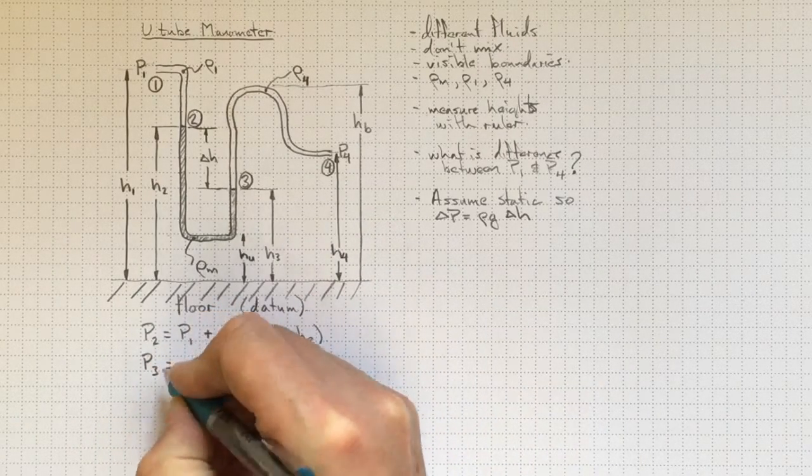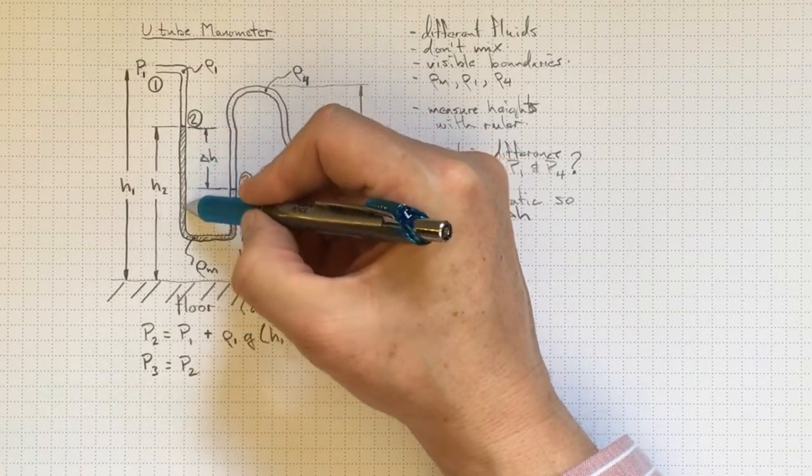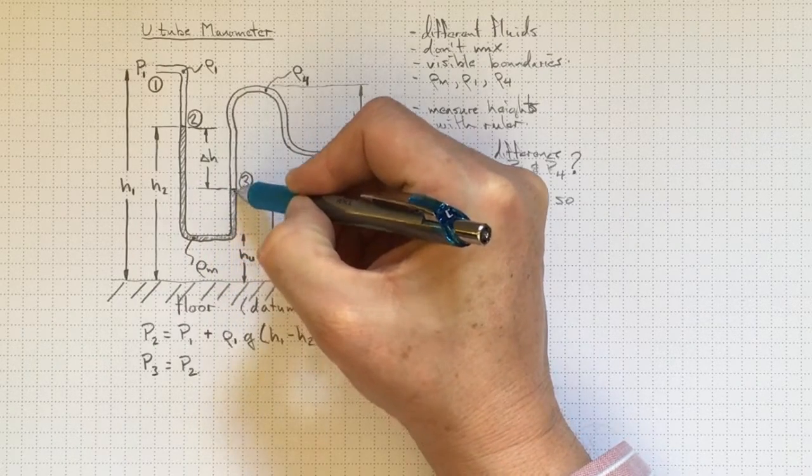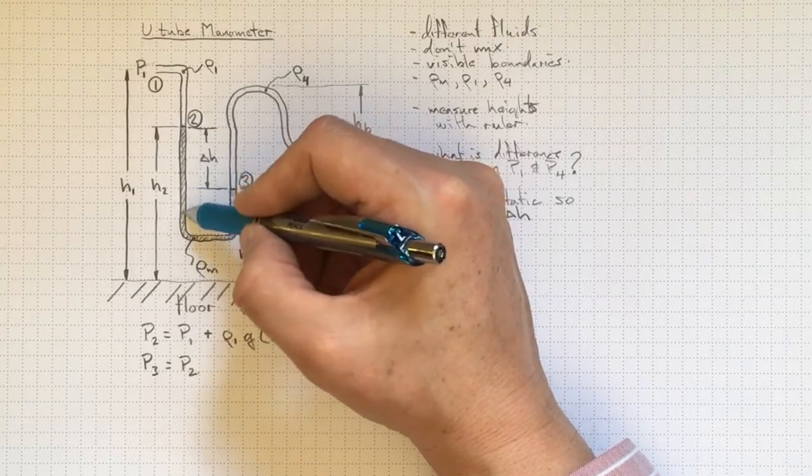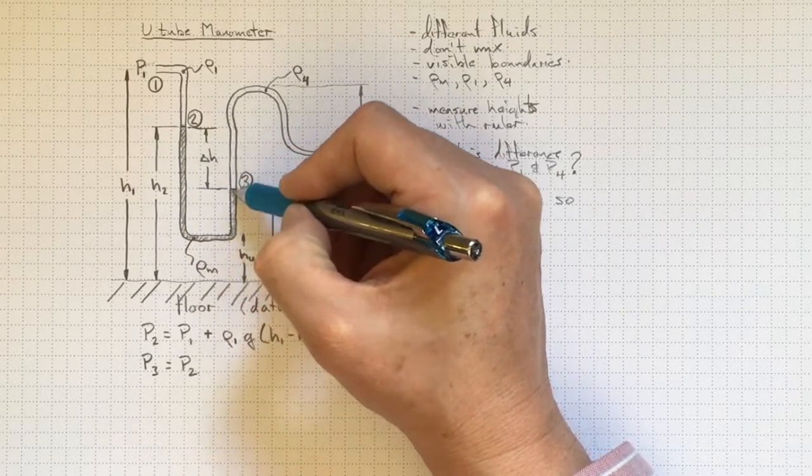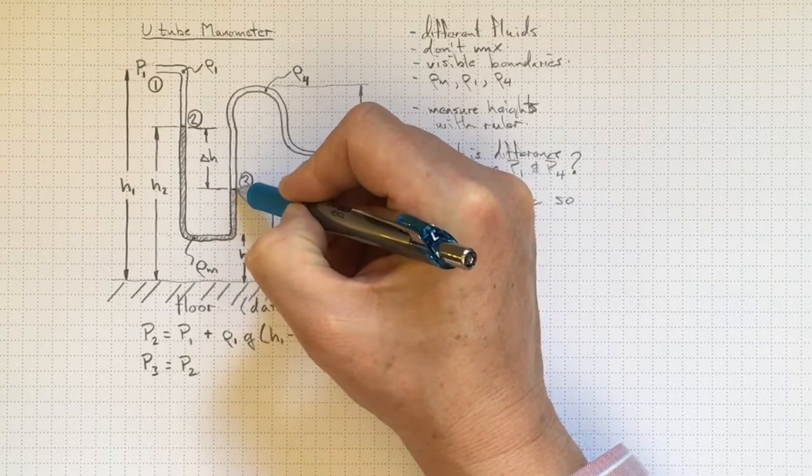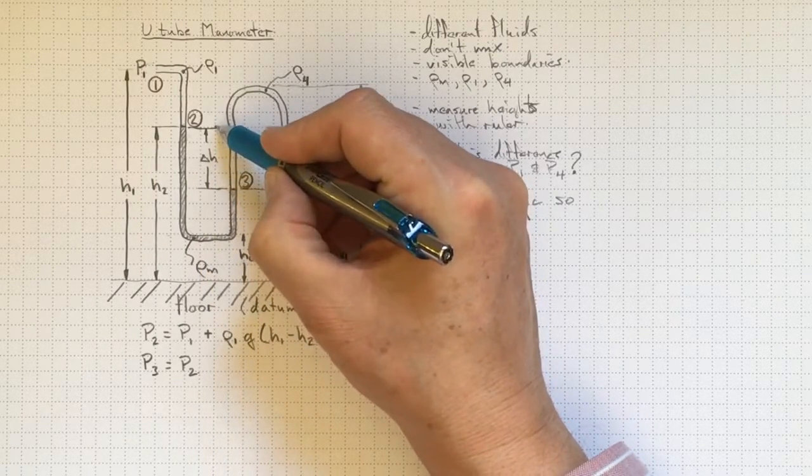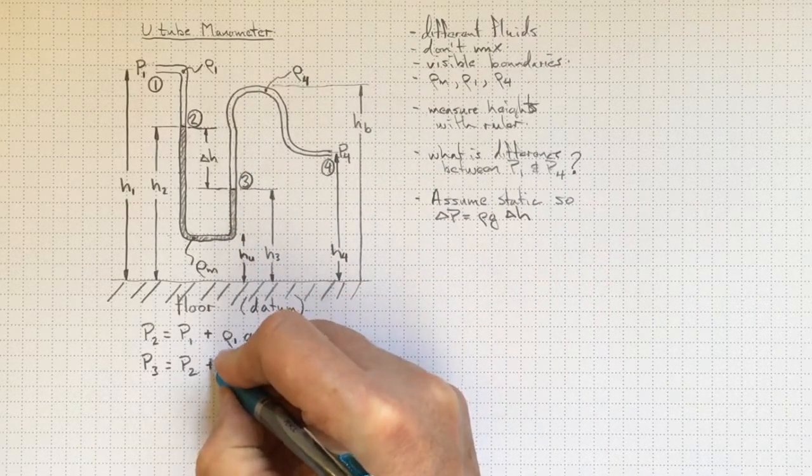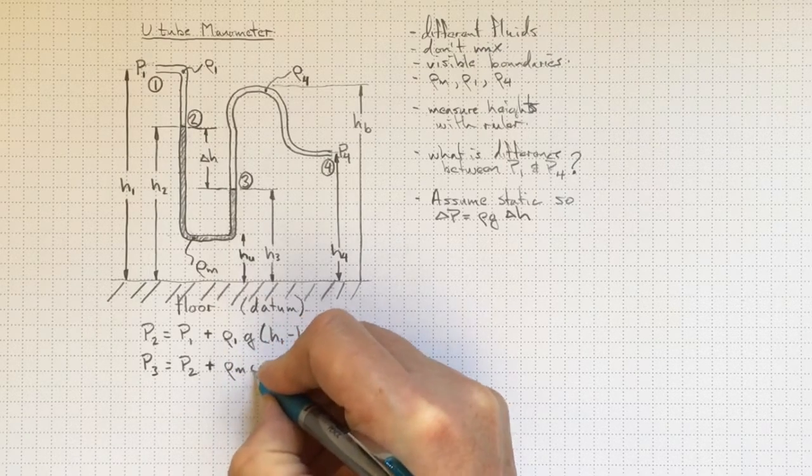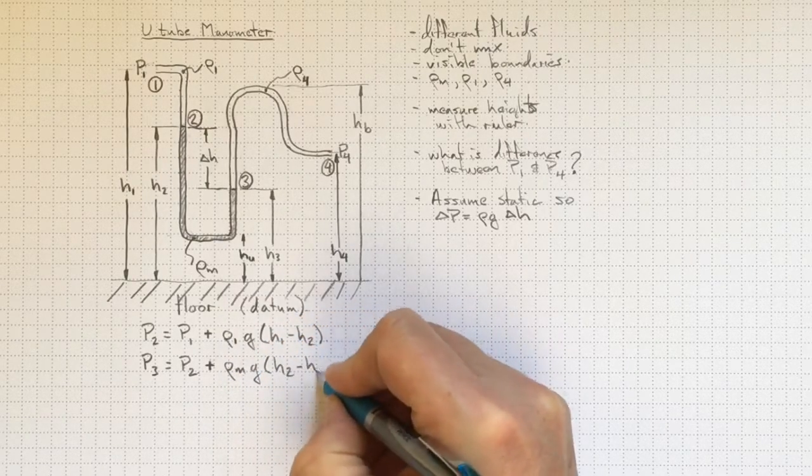We can figure out what P3 is in terms of P2. And we're going around the tube this way, following a continuous fluid. It's this manometer fluid, whatever it might be. It might be an oil or mercury or a variety of things. Following it around, we know its density. We get to location three, and we'll see a higher pressure because we're further down in the fluid. So we'll have a positive sign, the density of the manometer fluid times G times the difference in height between location two and location three.